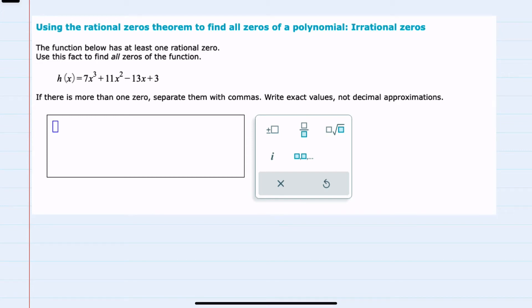In this video I'll be helping you with the Alex problem type called using the rational zeros theorem to find all zeros of a polynomial irrational zeros.